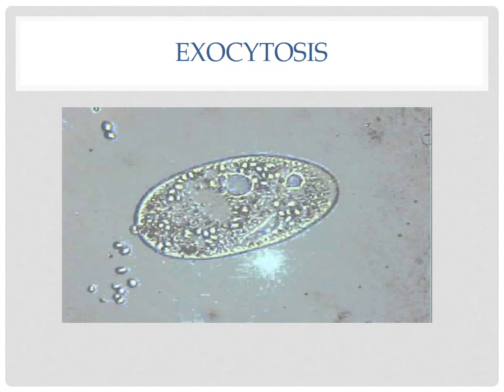The last part is exocytosis, shown with another single-celled organism. Exocytosis is generally used to expel waste products — to get waste out of the cell that is no longer needed. You can see waste particles being removed from the cell in the bottom left-hand corner. The cell membrane opens up, allows the waste to exit, and then reseals itself. That is exocytosis.